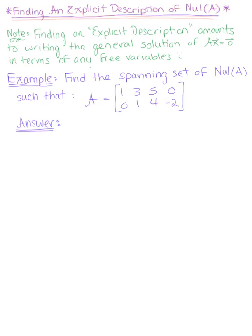In this next example, we explore finding an explicit description for the null of matrix A. We've already done this before — we've found explicit descriptions for the general solution to a homogeneous equation or a non-homogeneous equation back in chapter one, and we're doing the same thing here.